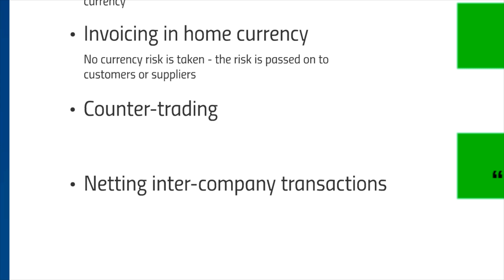The next option is to invoice in the home currency — you simply don't take any risk. Carol could agree to pay in pounds, so the agreement is made in her home currency. The question is whether the other party will accept that risk. In Carol's case, she'd have to make a specialist deal with the oven company to pay in pounds, but the seller typically has the power and will say they want payment in dollars, meaning Carol takes the currency risk.